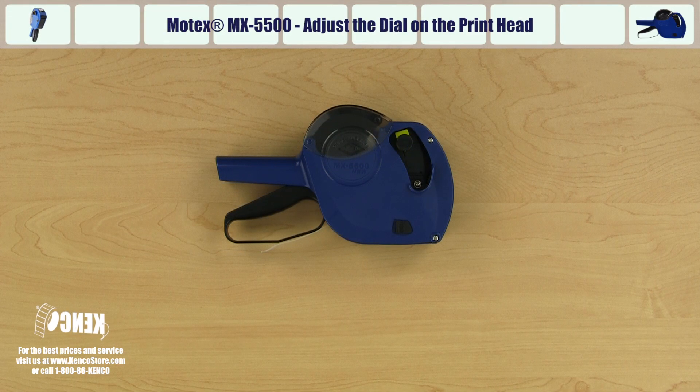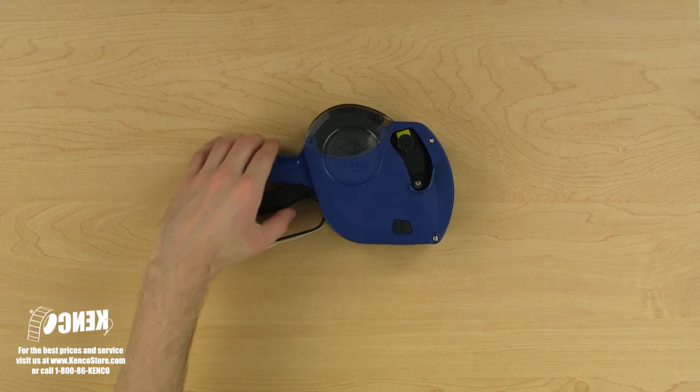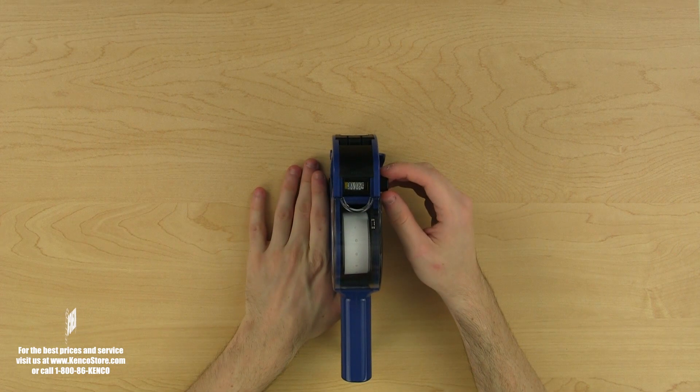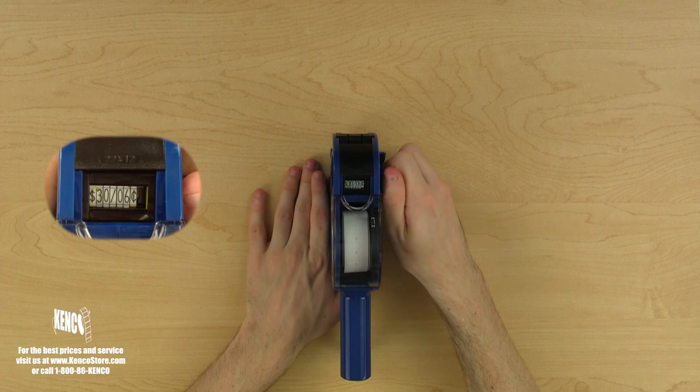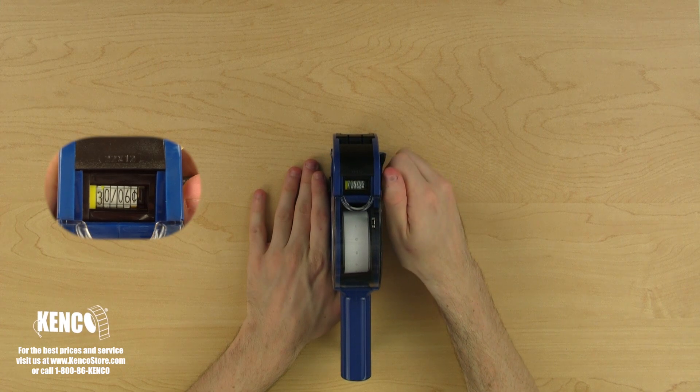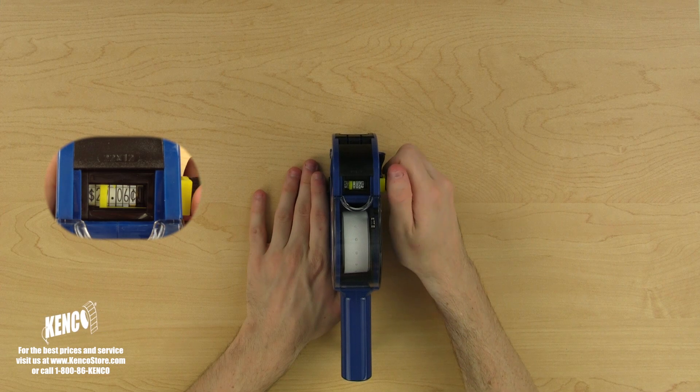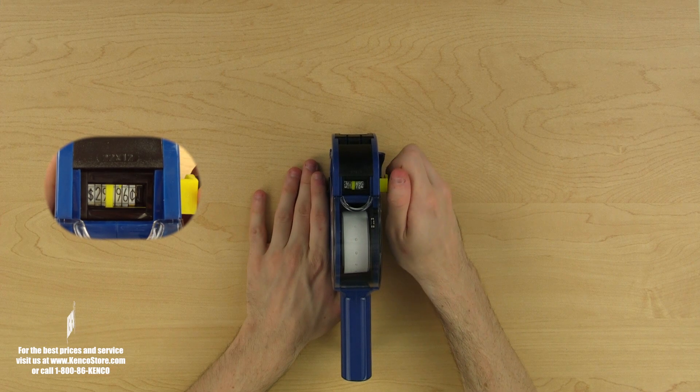Here I'm going to show you how to adjust the dial and imprint it. With the top part of the gun facing you, we'll use our left hand to hold the gun and our right hand to grab the adjustment dial. We can change the bands to our desired price by turning the adjustment dial. To move to the next set of digits, simply pull the adjustment dial and the adjustment indicator will follow you to the digit you are currently adjusting.